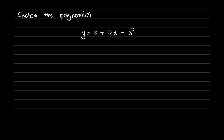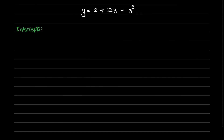Let us try to sketch the polynomial y equals 2 plus 12x minus x cubed. The first step is to determine the x and y intercepts of the given function.